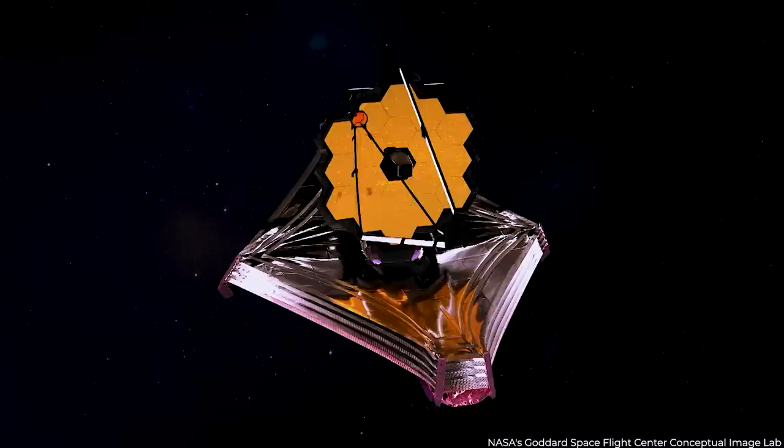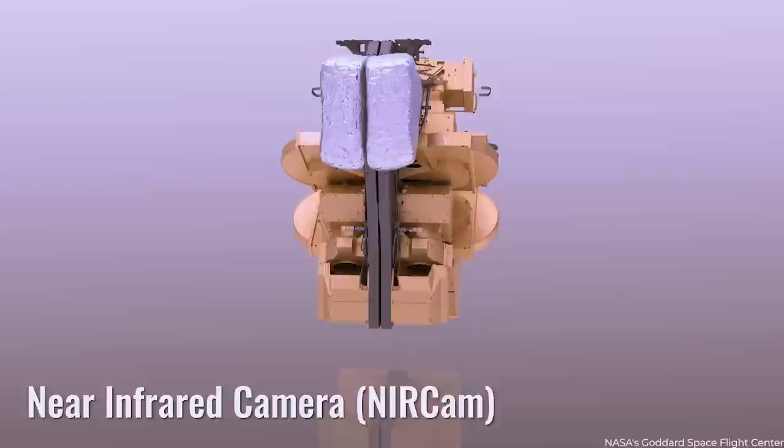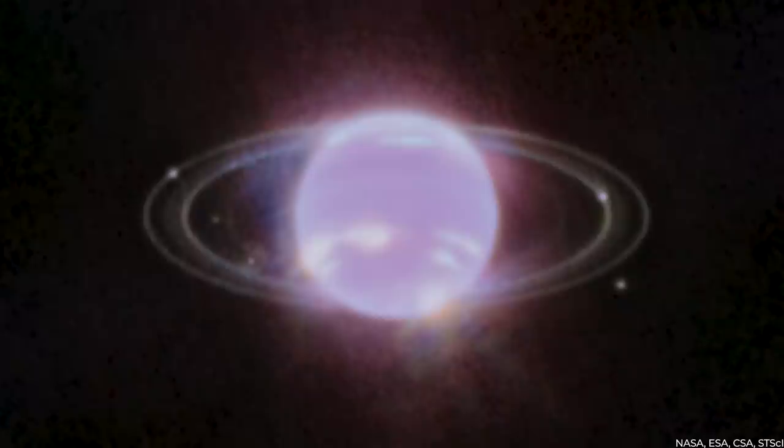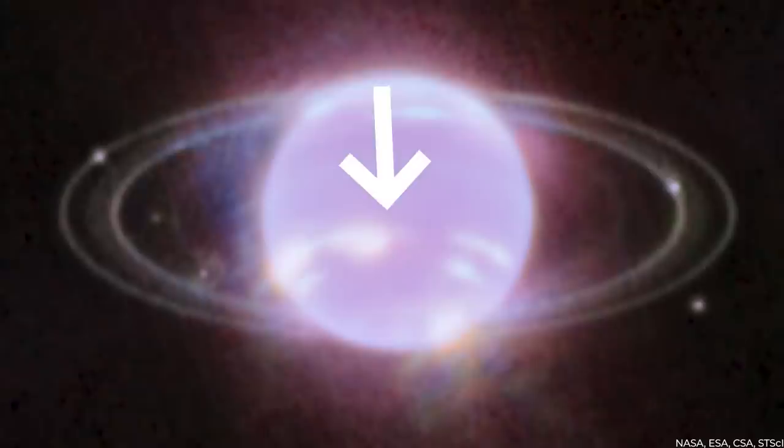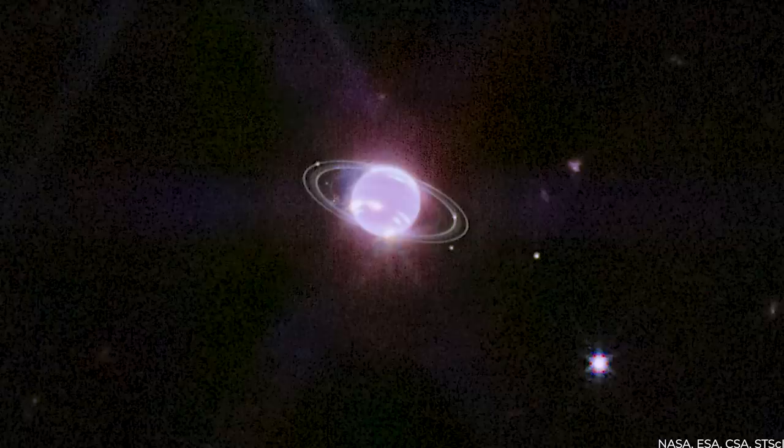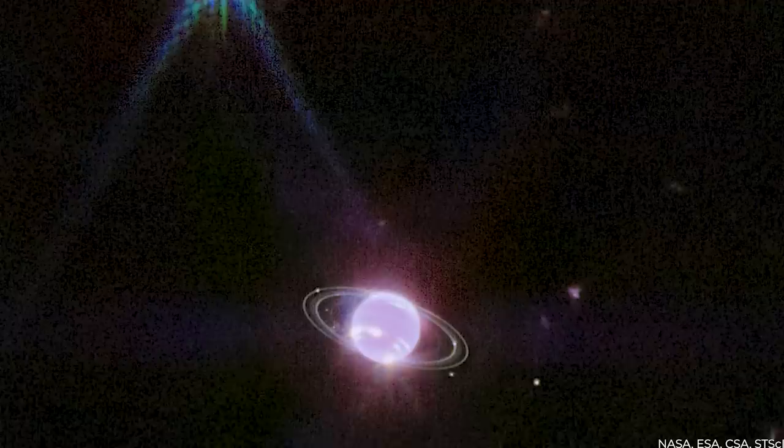However, Webb's images were acquired with its near-infrared camera, NIRCam, and the planet appears significantly lighter in these images. The planet's brilliant streaks and patches are methane ice clouds that reflect sunlight before it is absorbed by methane gas. Neptune's rings are one of the most prominent elements in the photos. Although the renderings of Neptune do not include rings, these JWST images support previous conclusions.